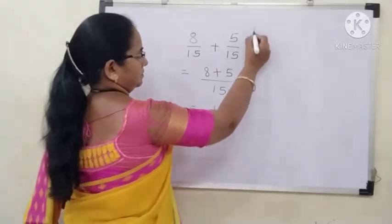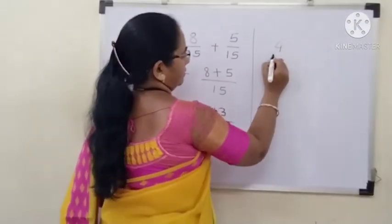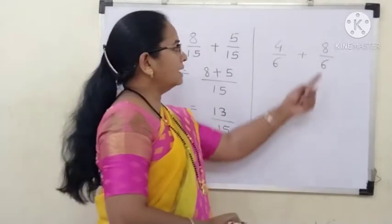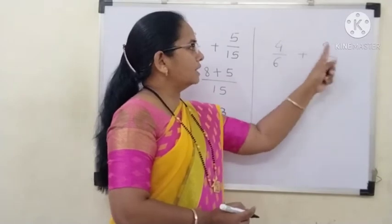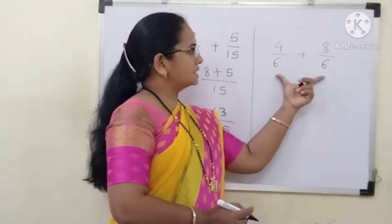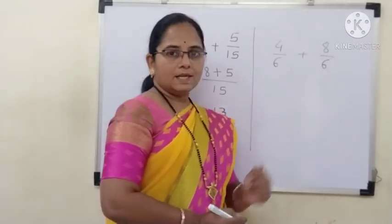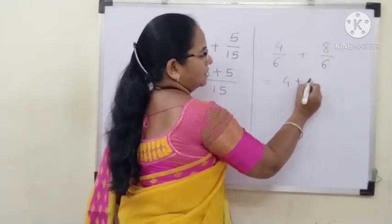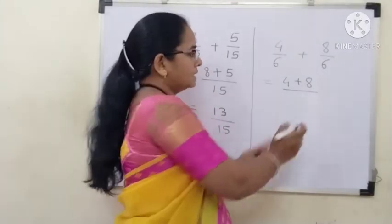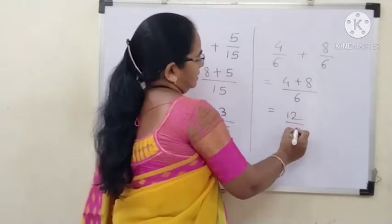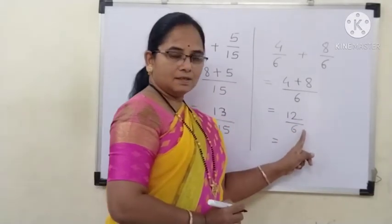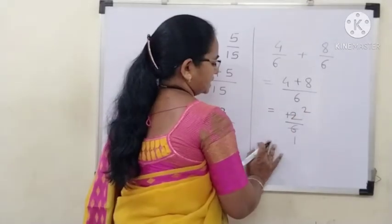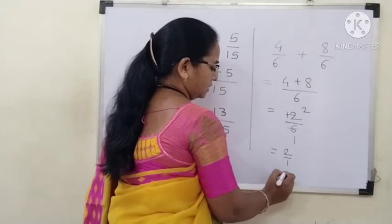Let us take another example: 4 by 6 and 8 by 6. In this case, the numerators are 4 and 8. The value of the denominator of both fractions is the same, that is 6, so we can call these 2 fractions like fractions. Addition of like fractions is very simple — we just add the value of the numerators, that is 4 and 8, and keep the denominator as it is. We get 12 by 6. We can divide 12 by 6, and the simplest form is 2 by 1, or simply 2.